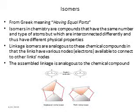Isomers are compounds which have the same number and type of atoms but are interconnected differently, and thus they have different physical properties. The connectivity from one atom to another is different — the order is different — and because of this difference in order, their appearance and physical properties are totally different from each other, although the number of atoms is the same in both compounds.